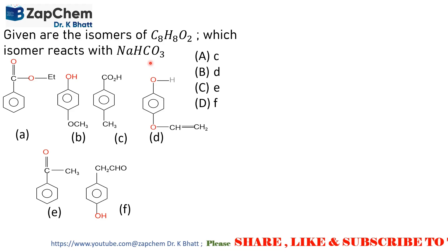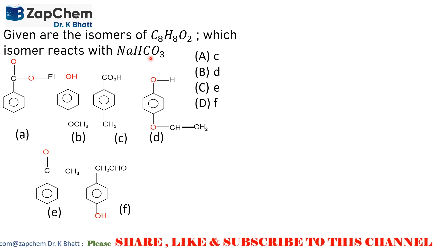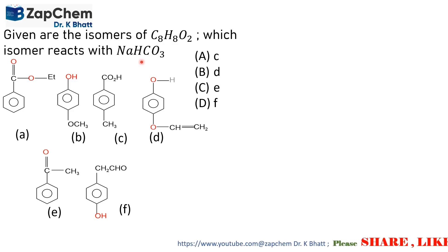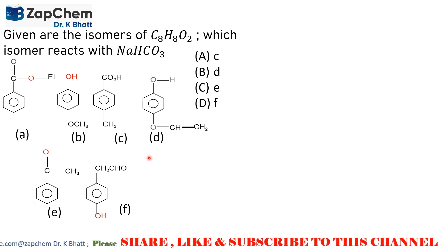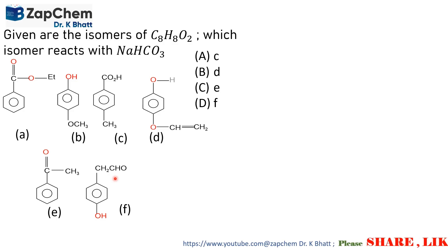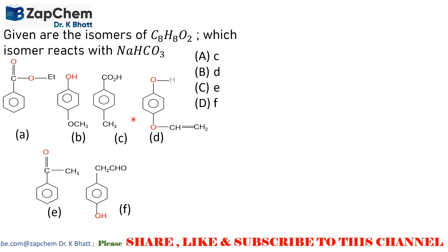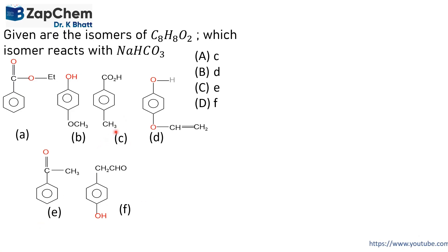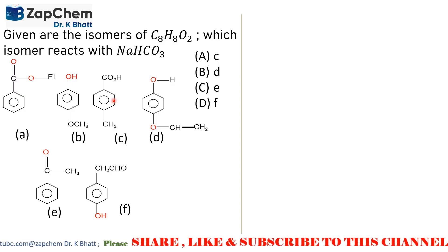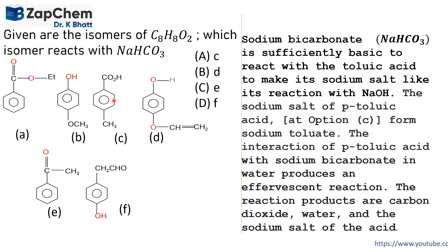So far as the reactions of sodium bicarbonate is concerned, sodium bicarbonate is basic enough to react with aromatic carboxylic acids. We have to look into the structures and find which compound has got an aromatic carboxylic acid attached to the benzene ring. As we find here, it is option C, the benzene ring attached with methyl group and the carboxylic group at para positions.